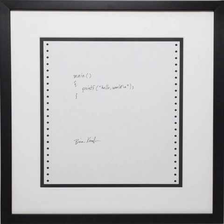A computer program in execution is normally treated as being different from the data the program operates on. However, in some cases this distinction is blurred when a computer program modifies itself. The modified computer program is subsequently executed as part of the same program. Self-modifying code is possible for programs written in machine code, assembly language, Lisp, C, COBOL, PL/1, and Prolog.